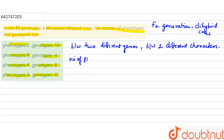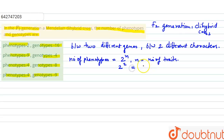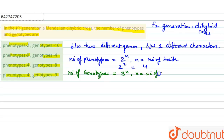There is a general method to calculate the number of phenotypes and genotypes. The number of phenotypes is equal to 2 power n, where n is the number of traits being studied. For a dihybrid cross, 2 power 2 equals 4 — that is the number of phenotypes. The number of genotypes is calculated as 3 power n, so 3 power 2 equals 9.